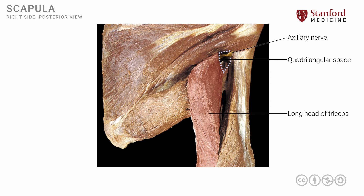There is another muscle very closely related to this, which we looked at in the earlier image — the teres major muscle. The fibers of this muscle go laterally and anterior to the long head of the triceps, as very clearly seen in this dissection photograph, and gain attachment onto the anterior side of the humerus. We have seen the exact location of the teres major muscle attachment onto the humerus in a previous lesson.